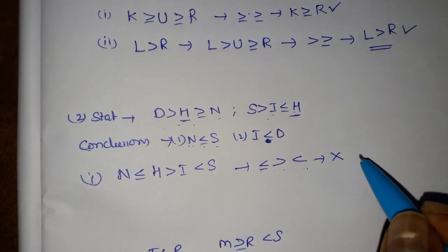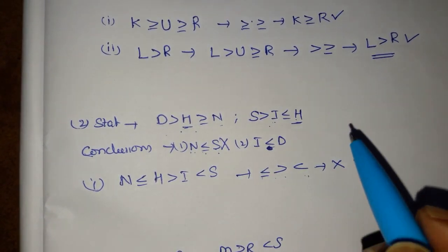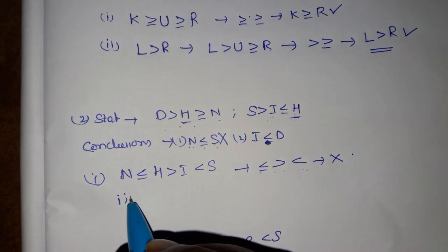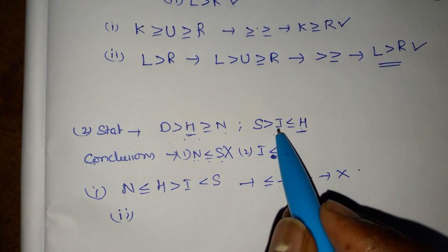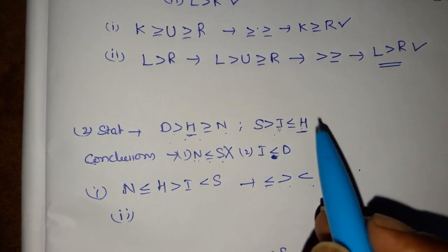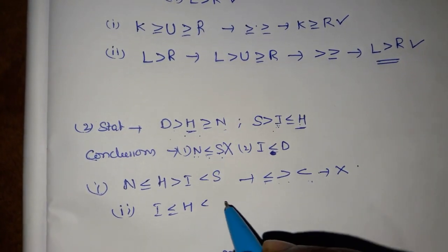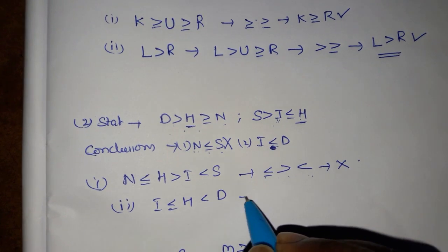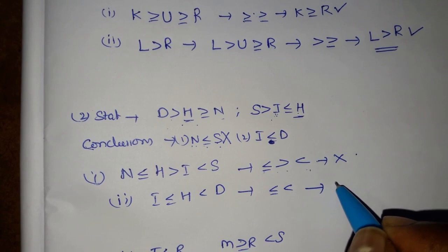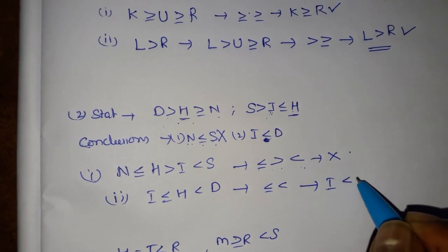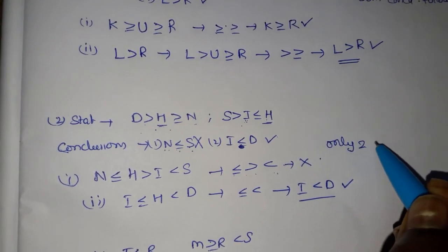So we take this conclusion as wrong. First conclusion is wrong. Check second: i less than d. The common element between i and d is h. So i less than or equal to h, and h less than d. Final symbol is less than or equal to, less than — so the final result is less than. i less than d is correct. Only two follows.